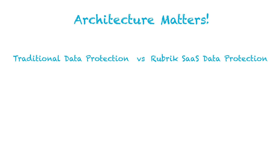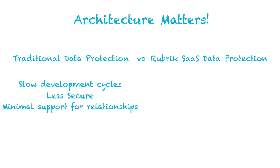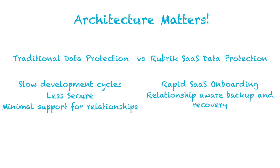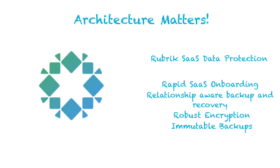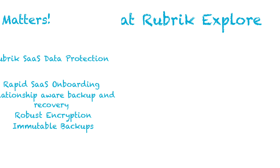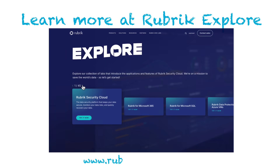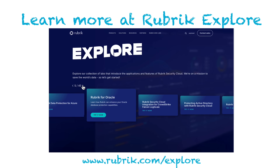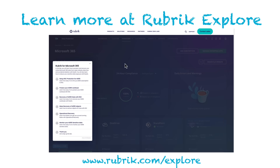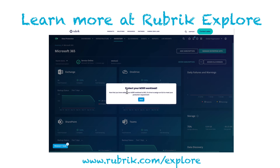In the end, not all SaaS data protection solutions are created equal. Traditional vendors move slowly, treat security as an afterthought, and deliver bare minimum backups that can leave you in an even bigger mess. Rubrik's modern, platform-centric architecture — complete with rapid SaaS support, relationship-aware backups, robust encryption, and true immutability — lets you protect your organization's most critical SaaS data with confidence. Give Rubrik a try and see how we measure up. Visit rubrik.com/explore to try it out for yourself by taking one of our self-guided, hands-on labs to see how your organization can truly become cyber resilient.